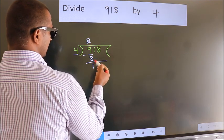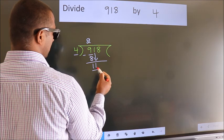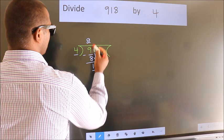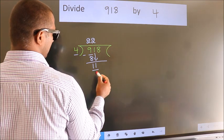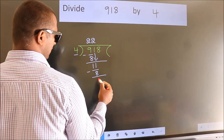After this, bring down the beside number. So, 1 down. So, 11. A number close to 11 in 4 table is 4 twos, 8. Now, we subtract. We get 3.